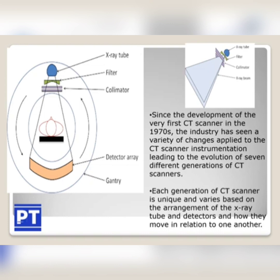All of this comes inside a gantry. X-ray tube, filter, collimator, and detector array are all inside the gantry. Since the development of the very first CT scanner, which was developed in the 1970s, the industry has seen a variety of changes leading to the evolution of 7 different generations of CT scanners. Each generation is unique and varies based on the arrangement of the X-ray tube and detectors and how they move in relation to one another.